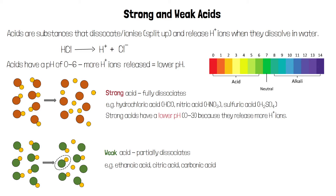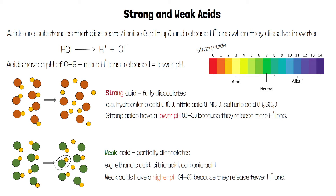Strong acids have a lower pH, between 0 and 3, because they release more hydrogen ions. Weak acids have a higher pH, between 4 and 6, because they release fewer hydrogen ions.